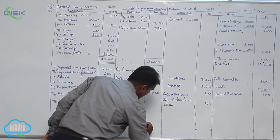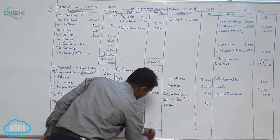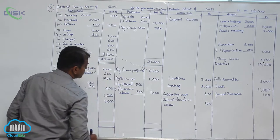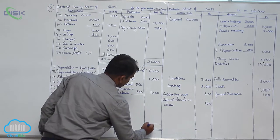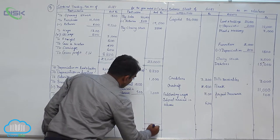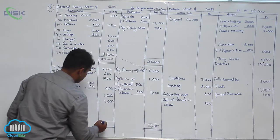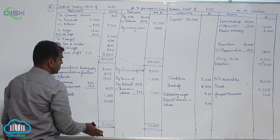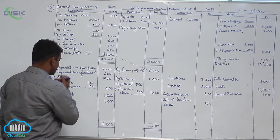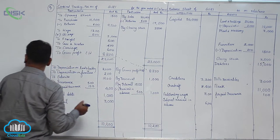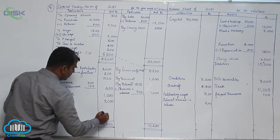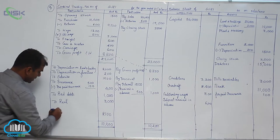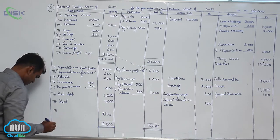Now gross profit carried down 8,200, we have written it as a brought down balance in the P&L account. Let us see what is the total on the credit side of P&L and debit. If you see, the credit side is actually more. The total is 10,200, so P&L account credit side total is 10,200. From 10,200, if you minus all this, you are getting your net profit as 2,100.